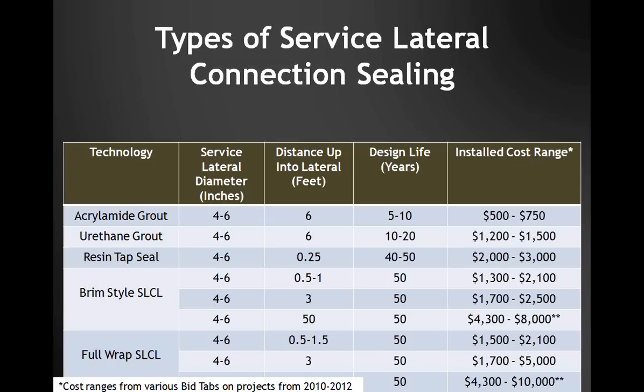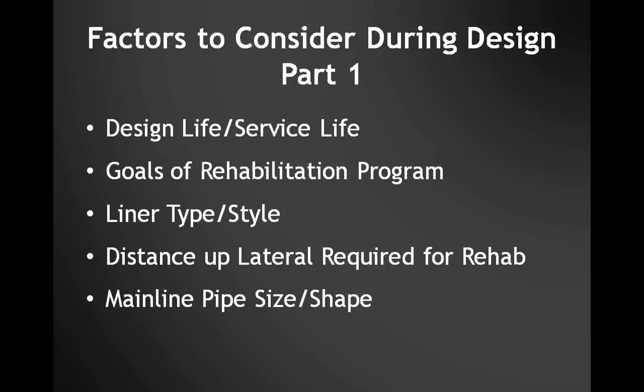Factors to consider during design include the design life or service life of the product, the goals of the rehabilitation program — whether you're under a consent order requiring removal of large percentages of infiltration or simply doing preventative maintenance — the liner type and style including how it's installed and production rates, the distance up into the lateral required, and finally the mainline pipe size and shape. Generally, service lateral connection liners are not appropriate and can't be installed in very large diameter sewers.